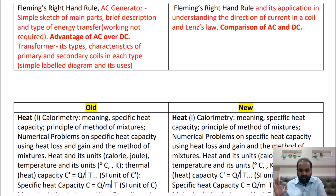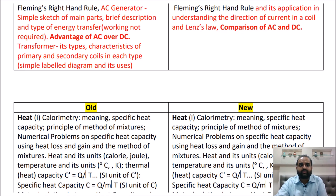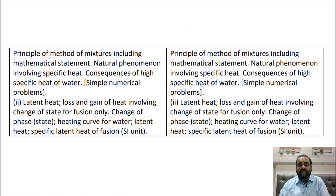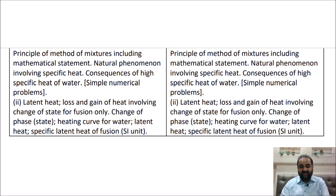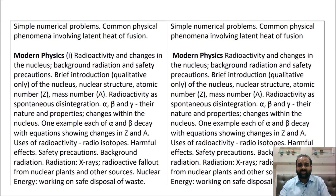Luckily there are no numericals in the transformer part. The Calorimetry chapter is entirely there with no deletions. In fact, the syllabus has been increased this year — the B part latent heat numericals, which were not there during the pandemic, will be asked this time. Simple numerical problems involving latent heat of fusion are now included.